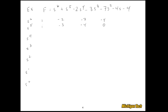For the s⁴ row, the first element is (-2·1 - (-3))/1 = 1, the second is (-7 - (-4))/1 = -3, and the third is (-4 - 0)/1 = -4, with a zero. Notice that the s⁴ row is exactly the same as the s⁵ row — whenever that happens the next row will be all zeros. We can verify quickly: 1·(-3) - (-3) = 0, and 1·(-4) - (-4) = 0. So we get a row of all zeros.